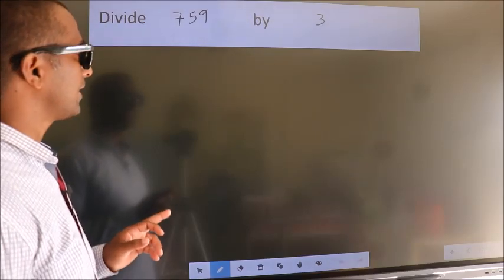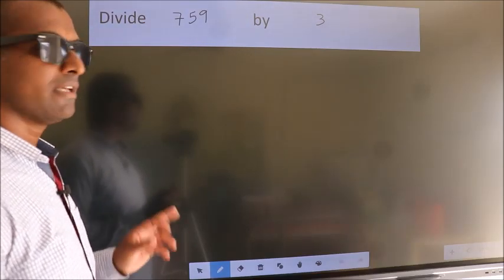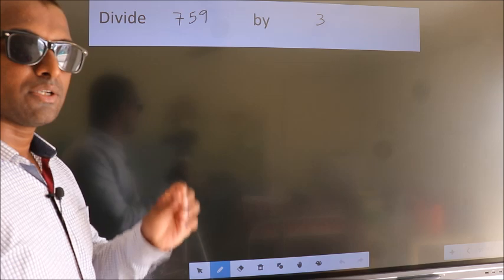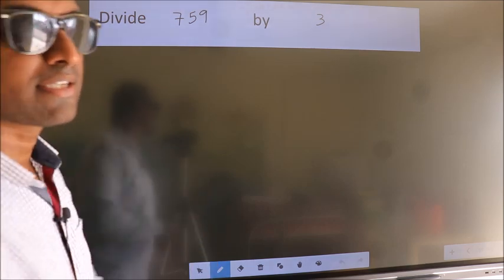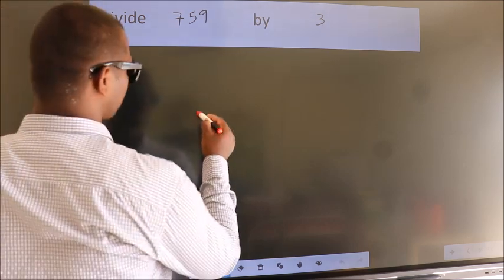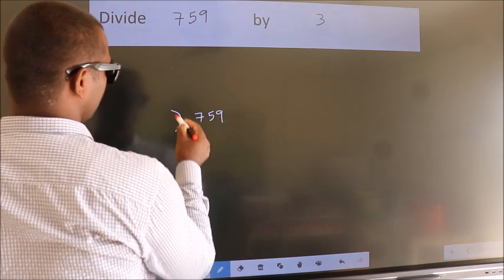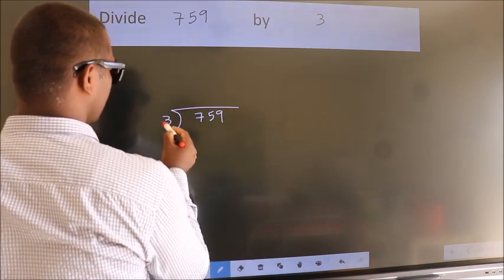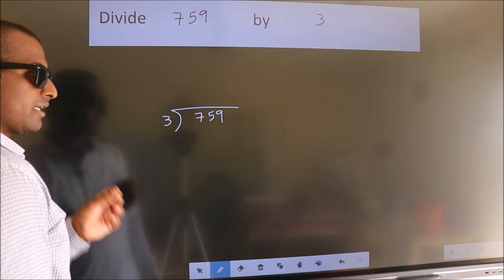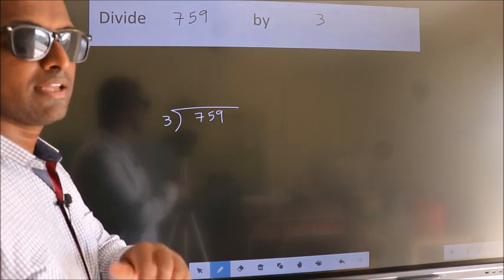Divide 7.59 by 3. To do this division, we should frame it in this way. 7.59 here, 3 here. This is your step 1. Next.